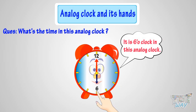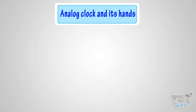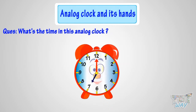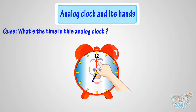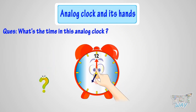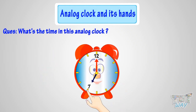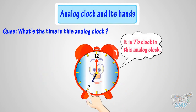So kids, you need to remember the places of various numbers on the clock. Here we have another example. Can you tell me what's the time in this analog clock? When the minute hand is at 12, it is time to the hour. But to which hour? The hour hand tells the hour. As the hour hand is pointing at 7, so it's 7 o'clock.